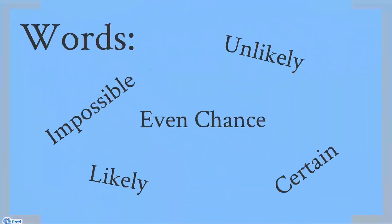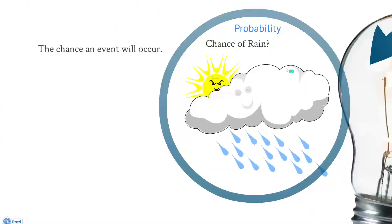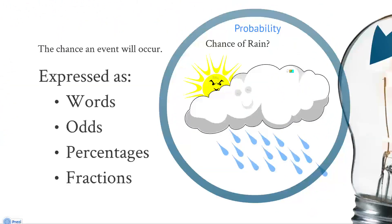The last way of expressing probability that I'll talk about today is with words: impossible, even chance, unlikely, likely. They're all ways of expressing probability, but they're not exact and they're not numbers. So we're going to leave them out of poker for the most part, but feel free to keep using them in everyday conversation. We now understand that probability is the chance an event will occur, and it can be expressed using words, odds, percentages, or fractions.